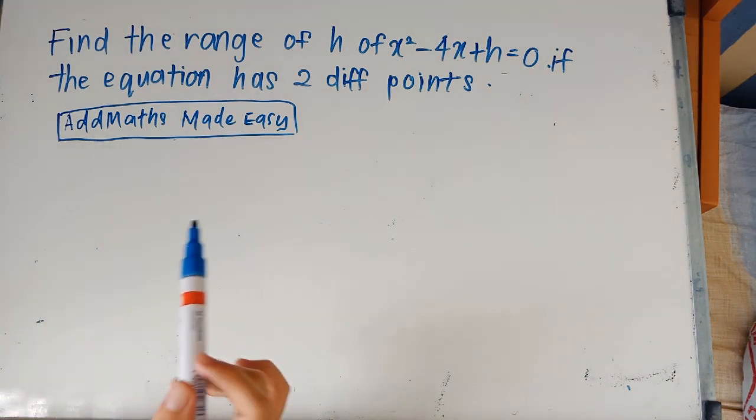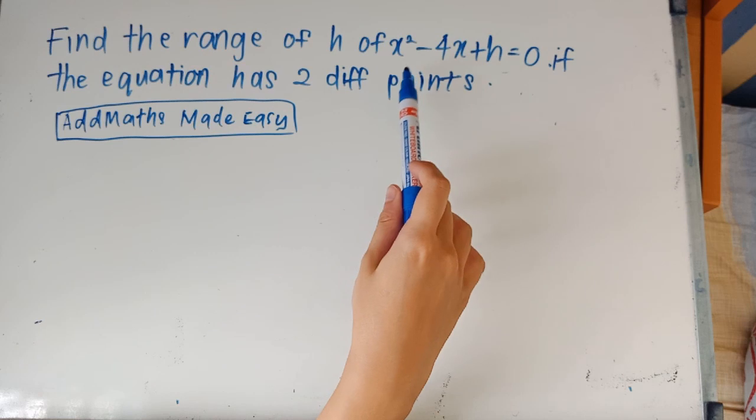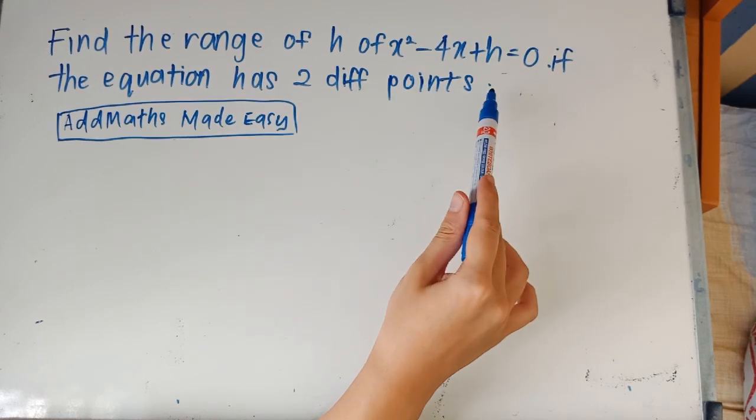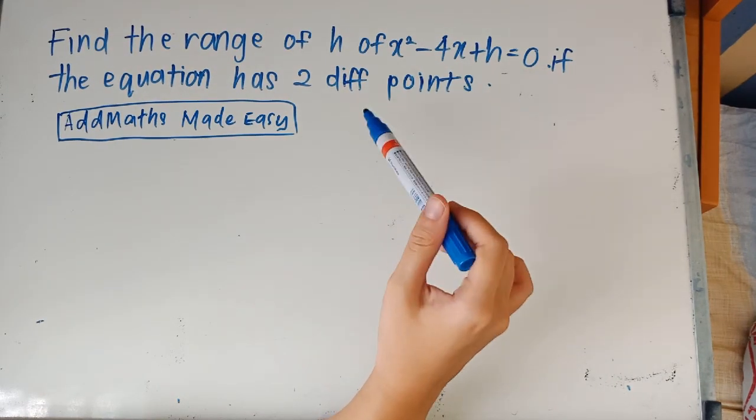But this is today's question: find the range of h of x squared minus 4x plus h if the equation has two different points.